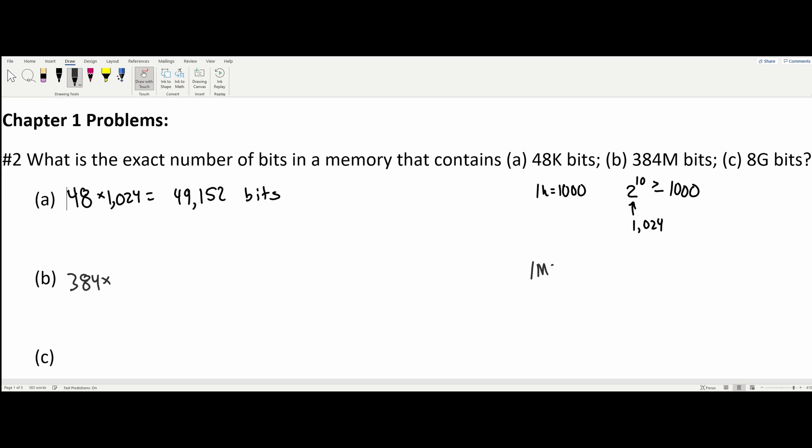So 1M is equal to 1 million. When we solve for our base 2, it's going to be 2 to some exponent that has to be greater than or equal to 1 million. The exponent for this is 2 to the 20.